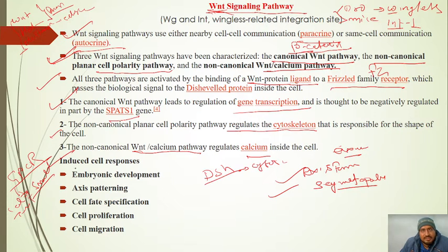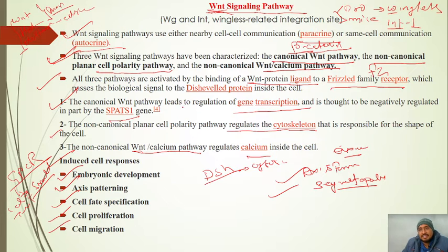Basically, WNT signalling is responsible for embryonic development, axis patterning, cell proliferation, and cell migration.